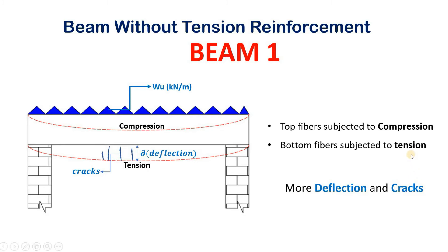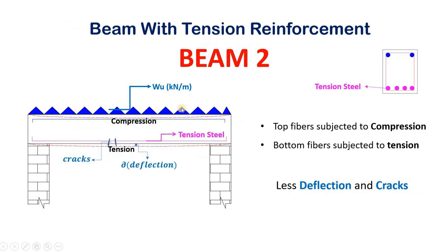The top side of the beam is subjected to compressive force and the bottom side is subjected to tensile force. Since concrete is good in compression but weak in tension, cracks may occur on the tension side of the beam — that is, at the bottom of the beam. Now let us take another example: beam two, with tension reinforcement.